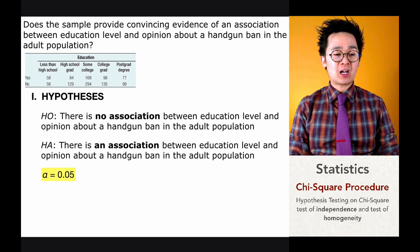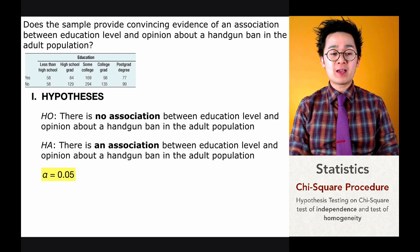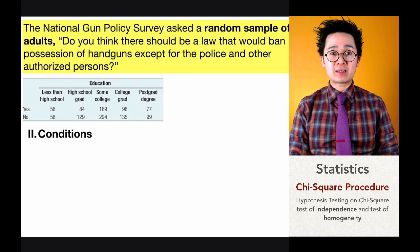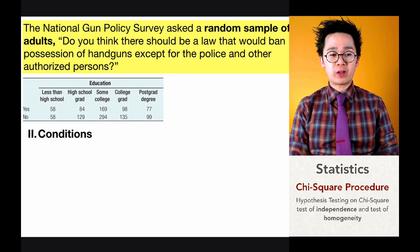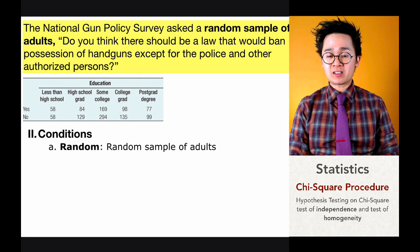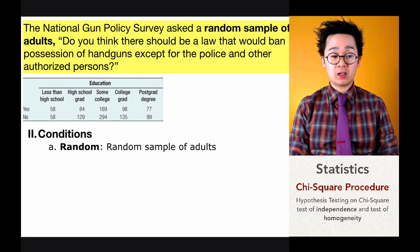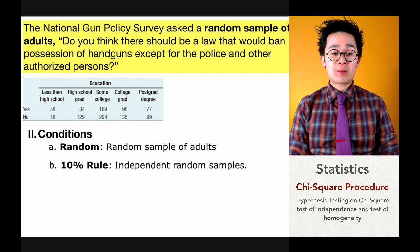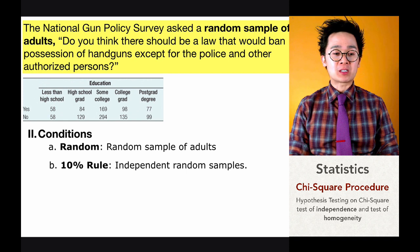Now that we have formulated our null and alternative hypothesis, we write the three conditions to verify that it is safe to use the chi-square test to reject or not reject our null hypothesis. According to the case, the National Gun Policy Survey asked a random sample of adults, so we know the samples come from randomly selected adults. This satisfies the randomness condition. For the 10% rule or independence, we show that the population is larger than 10 times the sample size.